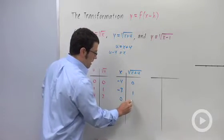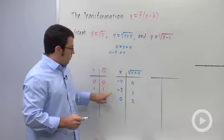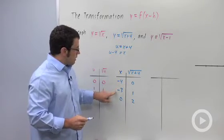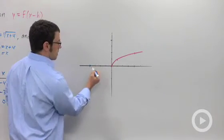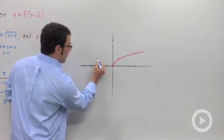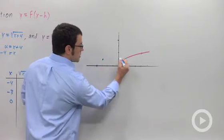So subtract 4, I get negative 4. Subtract 4, I get negative 3. Subtract 4, I get 0. The y values are 0, 1, and 2. And let me plot these three points: negative 4, 0; negative 3, 1; and 0, 2.